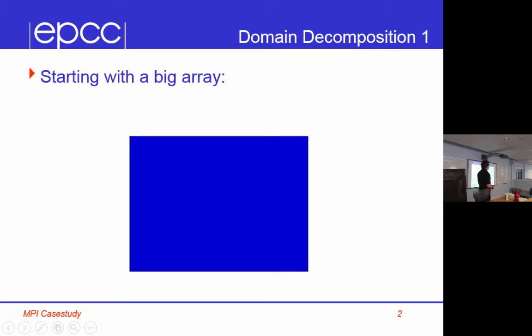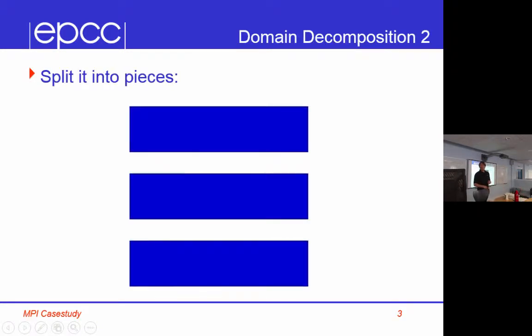So we're going to start with a big array, which will turn out to be an image. We're going to split it into pieces. And importantly, we're going to split it into strips. And this makes the code substantially easier than if we split it into blocks. There are a number of reasons for that. First of all, the halo swapping is easier. You only have to swap halos up and down.